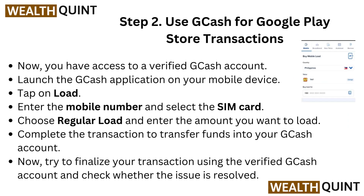Step 2: Use GCash for your Google Play Store transaction. Now that you have access to a verified GCash account, launch the GCash application on your mobile device. Tap on Load, enter the mobile number, and select the SIM card. Choose Regular Load and enter the amount you want to load. Complete the transaction to transfer funds into your GCash account, then try to finalize your transaction using the verified GCash account and check whether the issue is resolved.